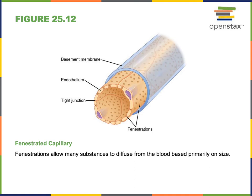The glomerular capillary is a fenestrated capillary, so it has numerous fenestration pores that enable the bulk flow of liquid from the blood in the glomerular capillary out into the capsular space in Bowman's capsule at the beginning of the nephron.